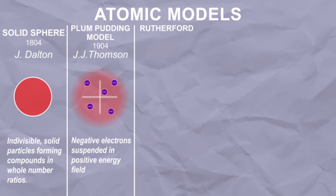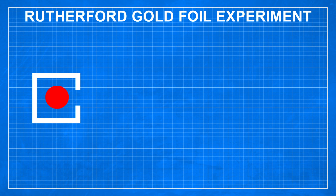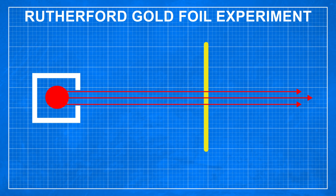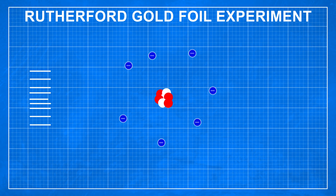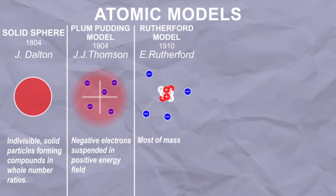Around 1910, Rutherford, Geiger and Marsden performed a series of experiments leading to a discovery of the nucleus. Instead of a positive energy field, the positive charge of an atom is concentrated in a small fraction of its volume, presumably at the center. They shot alpha particles at various thin metal foils. If atoms were consistent with the plum pudding model, all particles should go through them, but instead some particles scattered when passing through the foil. This led to the conclusion that there is a concentration of positive charge at the center of the atom — in a tiny point which they called the nucleus.